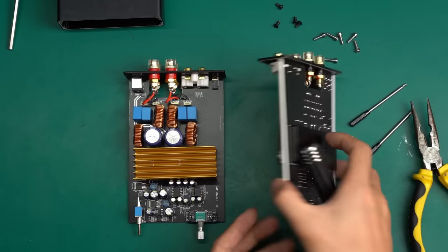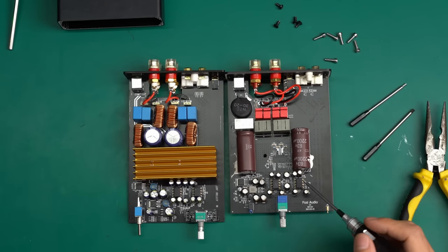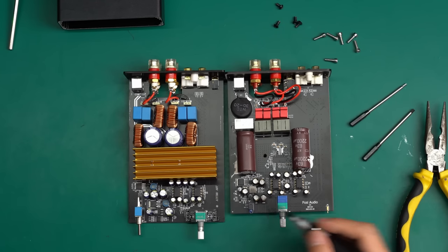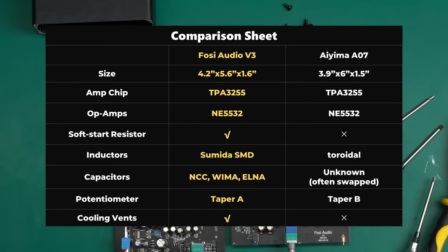By the way, both amplifiers support rolling the op-amps. The positions of the op-amps are similar, both supporting 8-pin socket op-amps. That's all for the comparison of the internal structure of these two amplifiers. Here is the comparison sheet of these two amps.